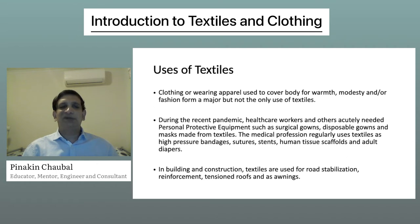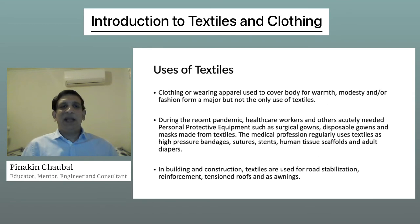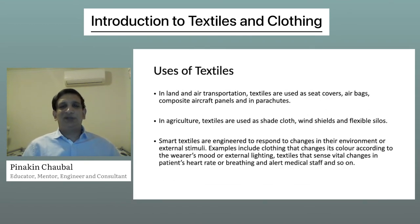In building and construction, textiles are used for road stabilization, reinforcement, tensioned roofs and as awnings. In land and air transportation, textiles are used as seat covers, airbags, composite aircraft panels and in parachutes. In agriculture, textiles are used as shed cloth, windshields and flexible silos.